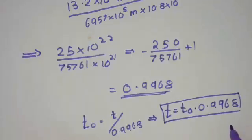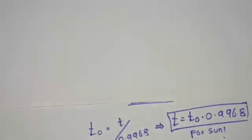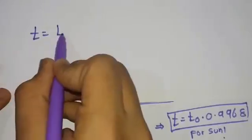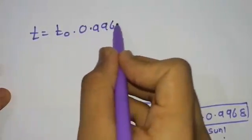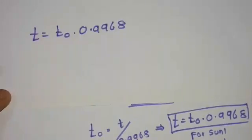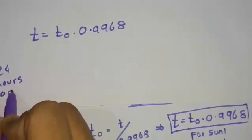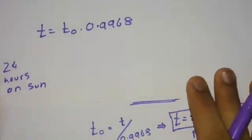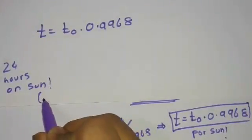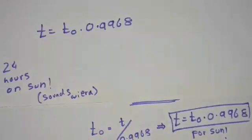So for the Sun, the equation is t equals t-naught times 0.9968. Let's substitute an example: if t-naught is the rest time — the actual time — and t is the time spent on the Sun, let's take 24 hours for fun. If 24 hours is the rest time in space, then t equals 24 times 0.9968.